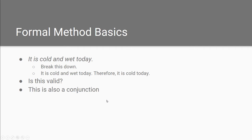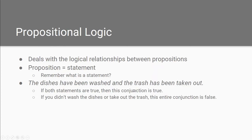Let's start with this example: 'It is cold and wet today.' If we break this down we really see that there are two statements here — 'It is cold today' and 'It is wet today.' We can also write a conclusion: 'Therefore it is cold today.' Is this a valid argument? Of course it is. This is also what's called a conjunction, because you see the word 'and' here — and this is where propositional logic comes in. It deals with the logical relationships between propositions or statements.